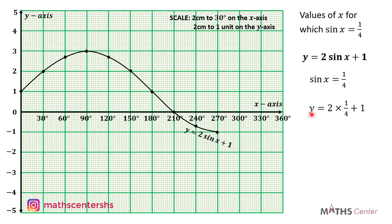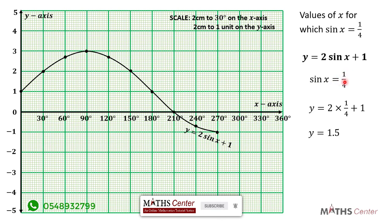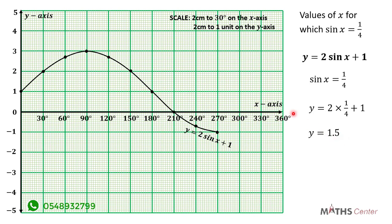When we substitute sin x equals 1 divided by 4 into the relation, we get y is equal to 2 times 1 divided by 4 plus 1. The 2 and 4 simplify to give y equal to one half plus 1, which equals 1.5. So when sin x is equal to 1 divided by 4, y is equal to 1.5. From the graph, we can find the values of x for which y equals 1.5, which will be the same as when sin x equals 1 divided by 4.